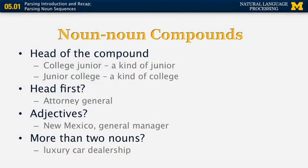What about adjectives? Words like 'college' in 'college junior' can be considered adjectives because they modify the second noun. In other cases we have explicit adjectives as part of the noun phrase — for example, 'New Mexico' where 'new' is clearly an adjective. In 'general manager,' the word 'general' is an adjective rather than a noun. It turns out that in English, people don't always agree — they often label 'general manager' as either adjective plus noun, or two nouns.